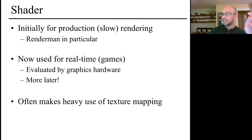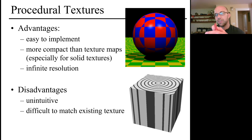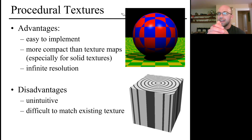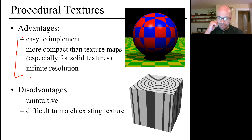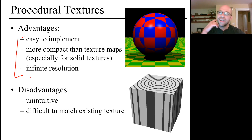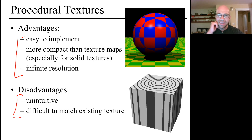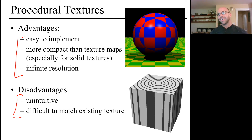A procedural texture shader doesn't use a texture map at all, but gets color purely from the position in space at the ray-triangle intersection. The advantages are that procedural textures are easy to implement, more compact (short code rather than a giant texture map), and have infinite resolution — issues like zooming in too close or too far don't matter since they're closed-form functions evaluable at arbitrary detail. The disadvantage is it requires writing code, which some artists won't do, and if you have an existing photograph you want to replicate, you have to write code that produces that texture rather than simply wrapping the photograph around the model.